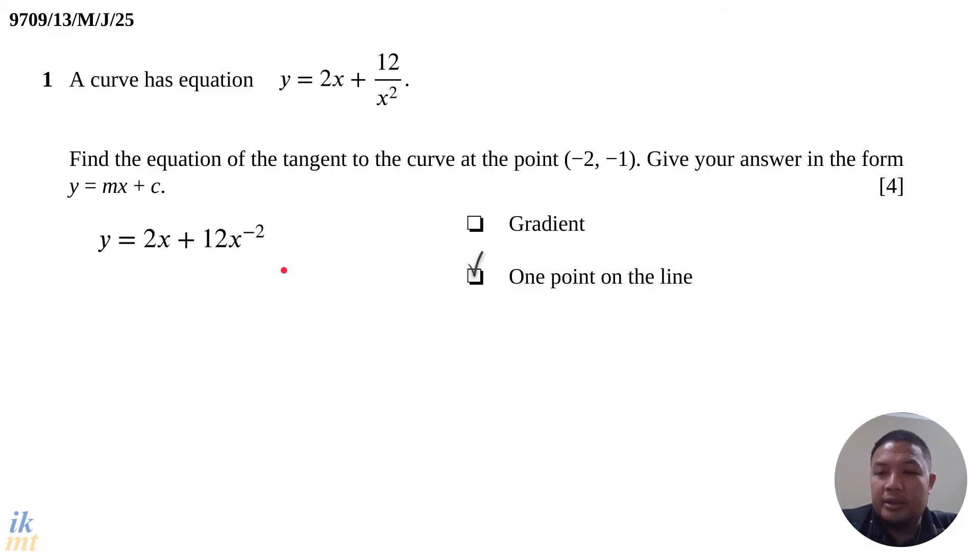We'll just use the power rule. So just differentiate normally. dy/dx, you'll get 2 - 24x^(-3). I think you all know how to differentiate this to get this form.